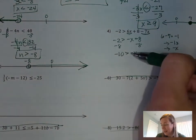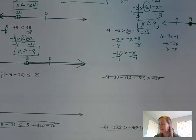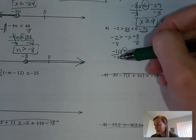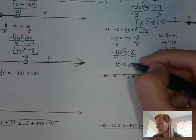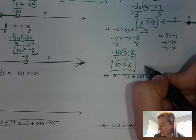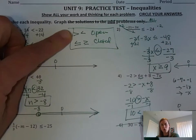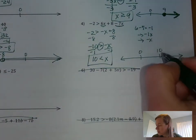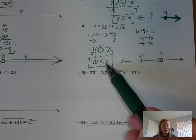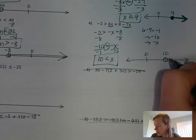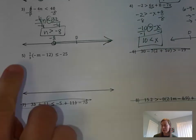It looks like we're done, but we're not — x still has a negative one in front of it. Divide both sides by negative 1, and flip the sign since we're dividing by a negative. Negative 10 divided by negative 1 becomes positive 10. Flip the sign. Negative x divided by negative 1 is positive x. Solution: 10 < x, or reading from the variable, x > 10. Graph: put 0 and 10 on the number line, open dot at 10 since there's no 'or equal to,' arrow pointing right.